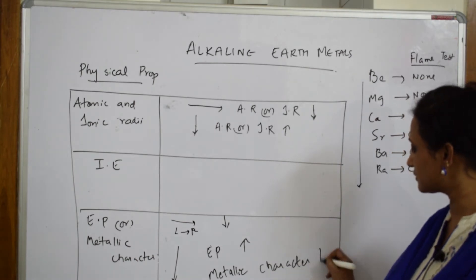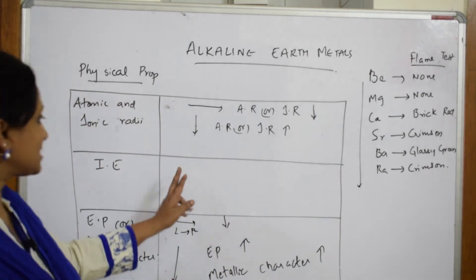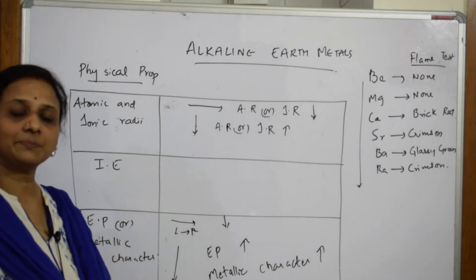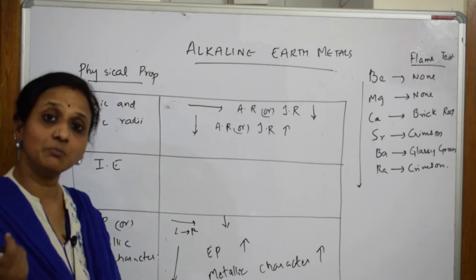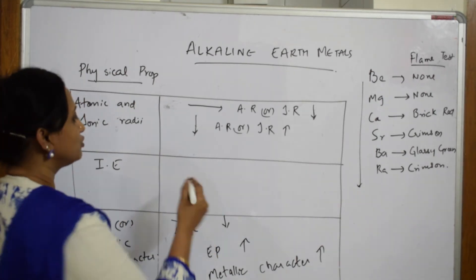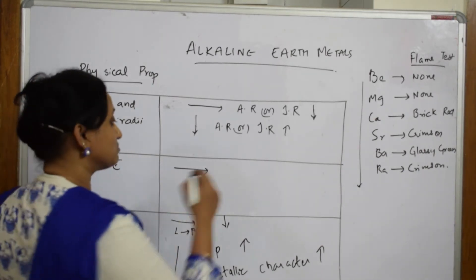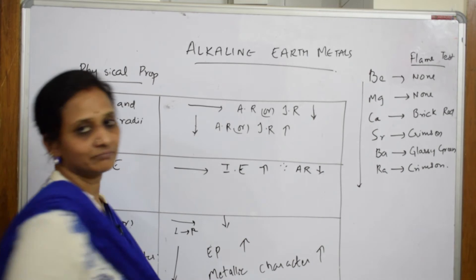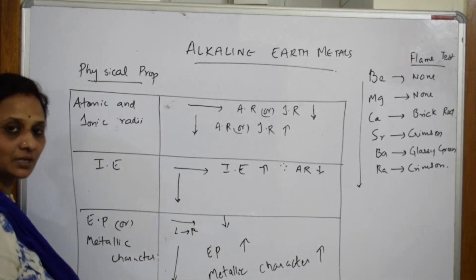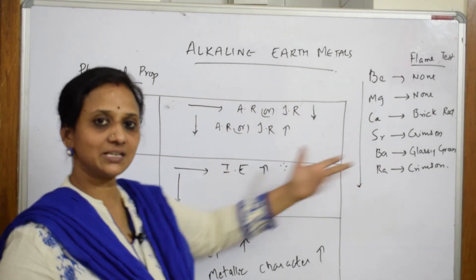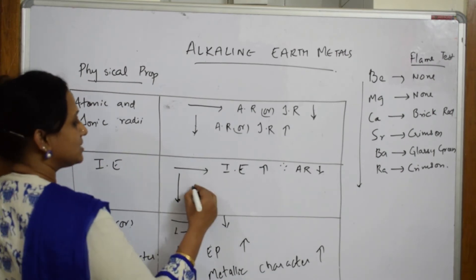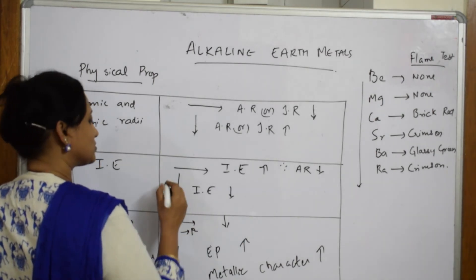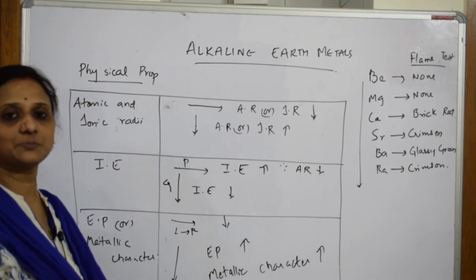For ionization enthalpy: when moving from left to right in a period, electrons keep getting added to the same shell, so the energy required is more — ionization enthalpy is higher because atomic radii is less. When moving from top to bottom in a group, the number of shells increases and atomic size increases, so less energy is needed to remove an electron — ionization enthalpy decreases down the group.